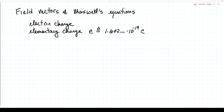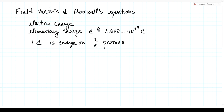With that definition, one Coulomb is the charge on about 6.242 times 10 to the 18th protons, and minus one Coulomb would be the charge on that number of electrons. There are historical reasons for the definition of the Coulomb, and this definition is adopted to keep us close to that historical definition.